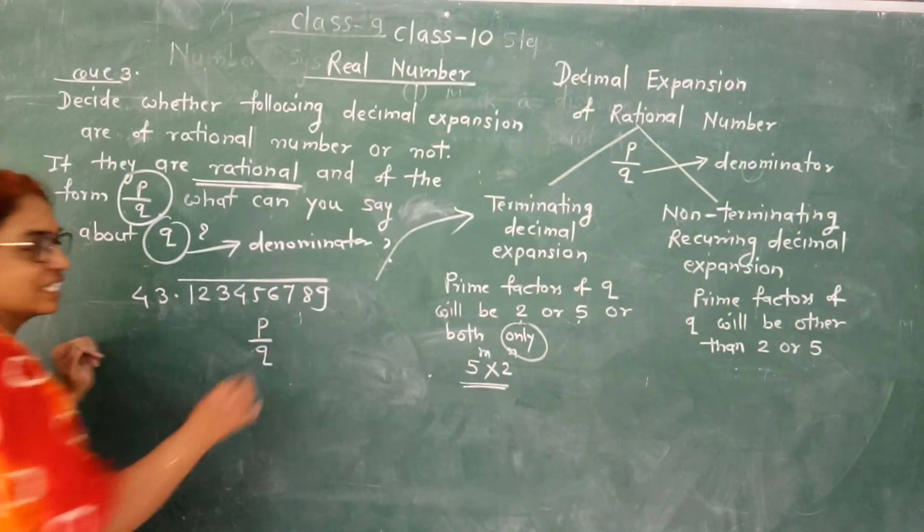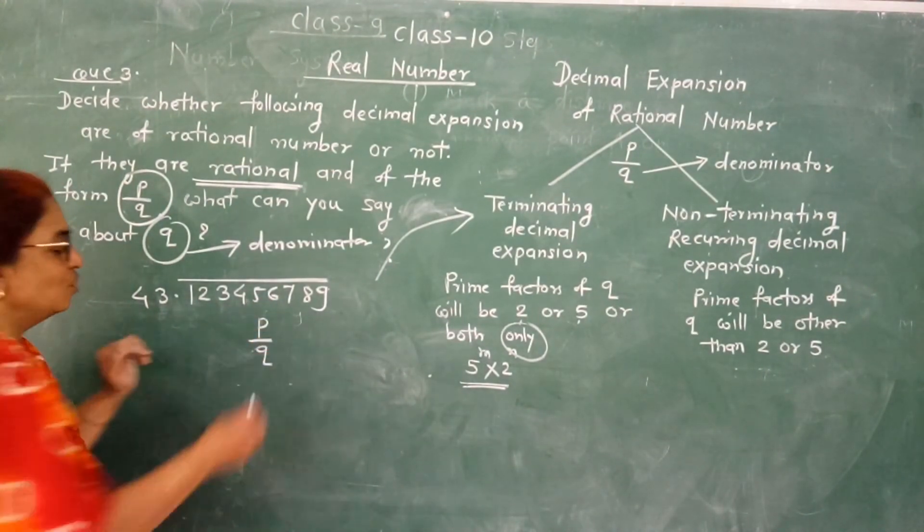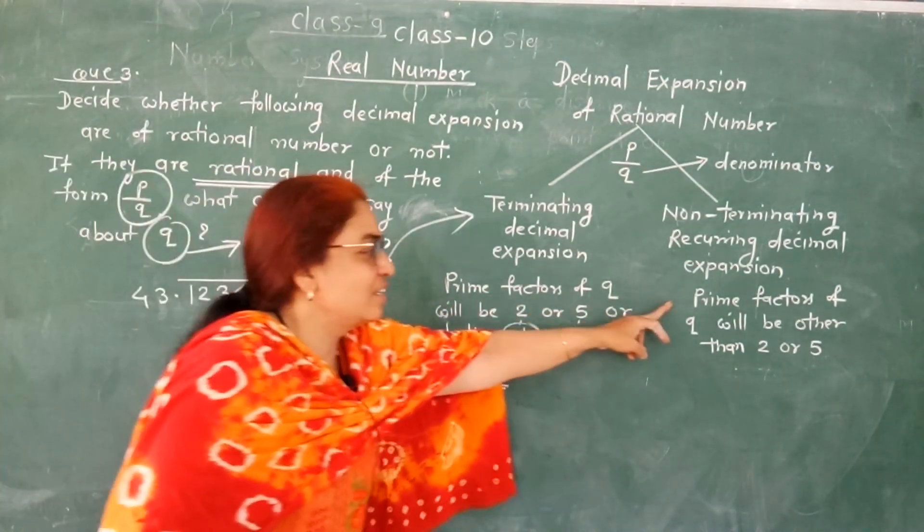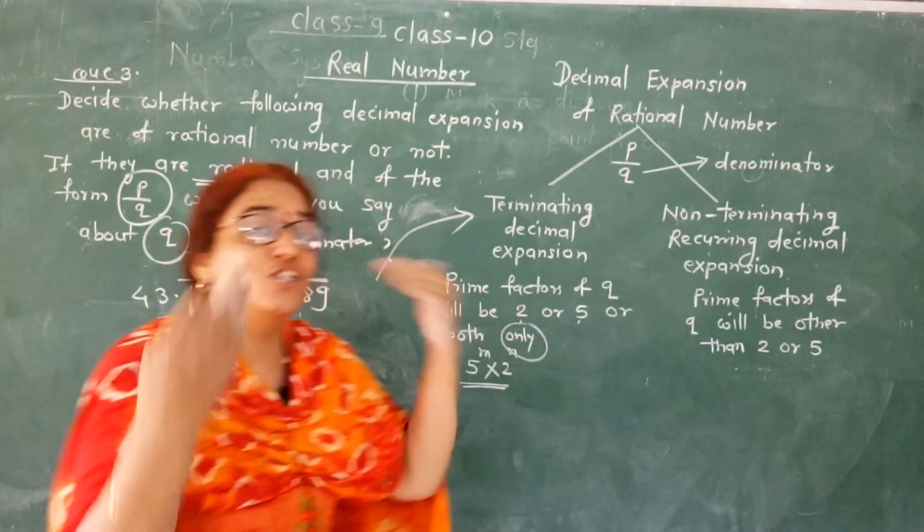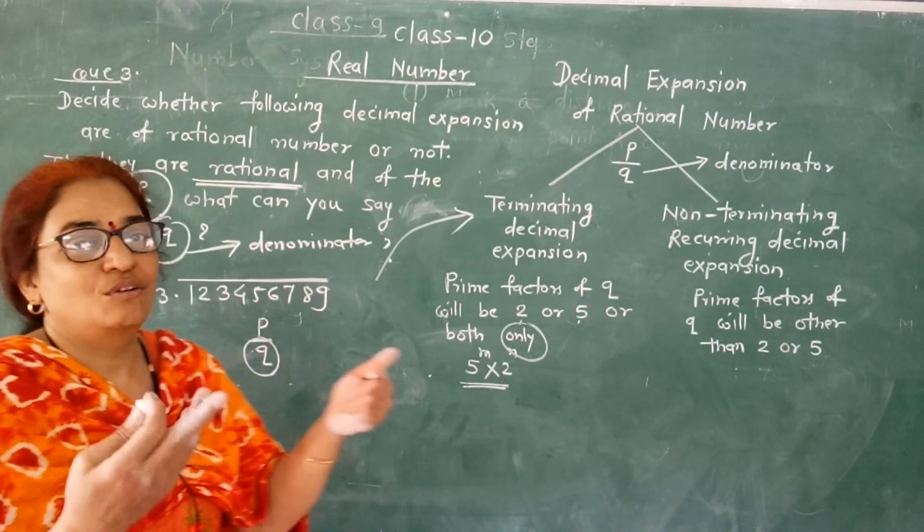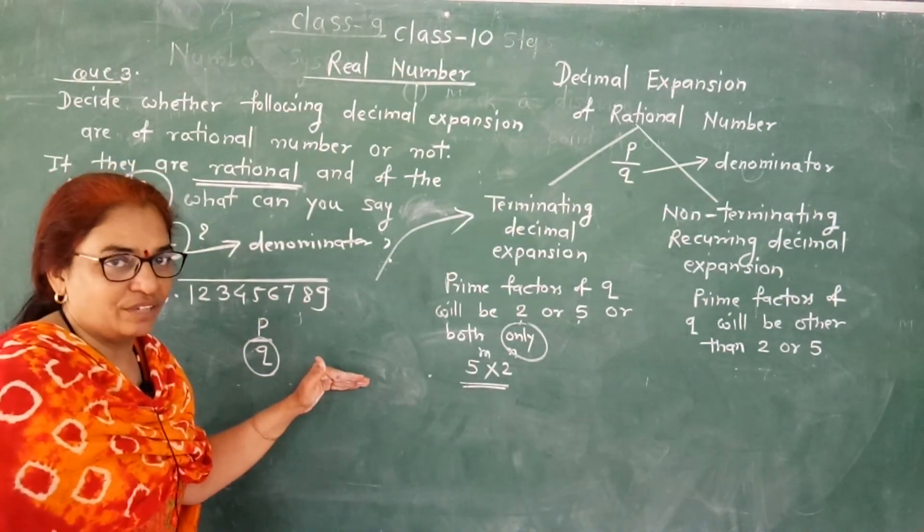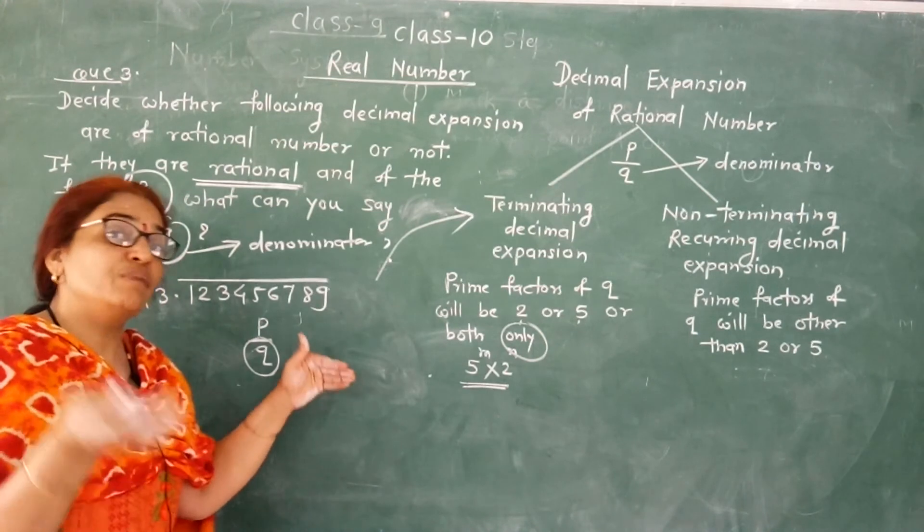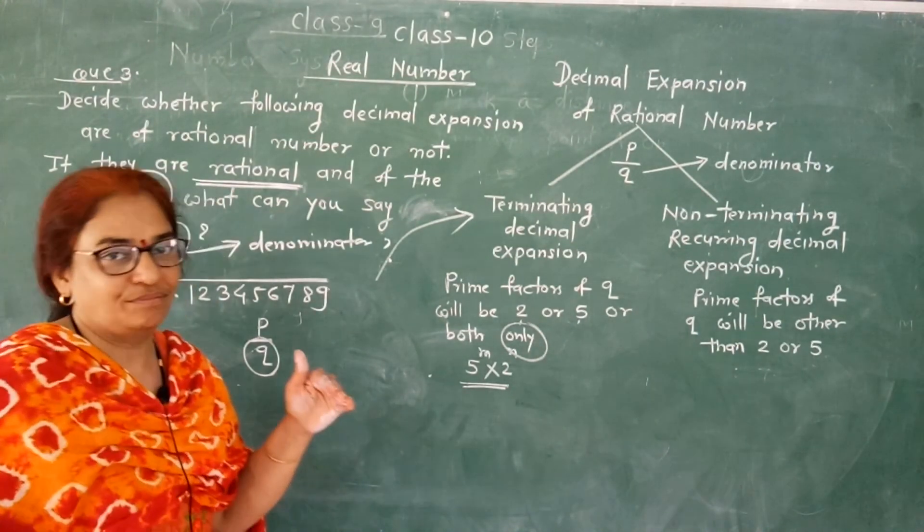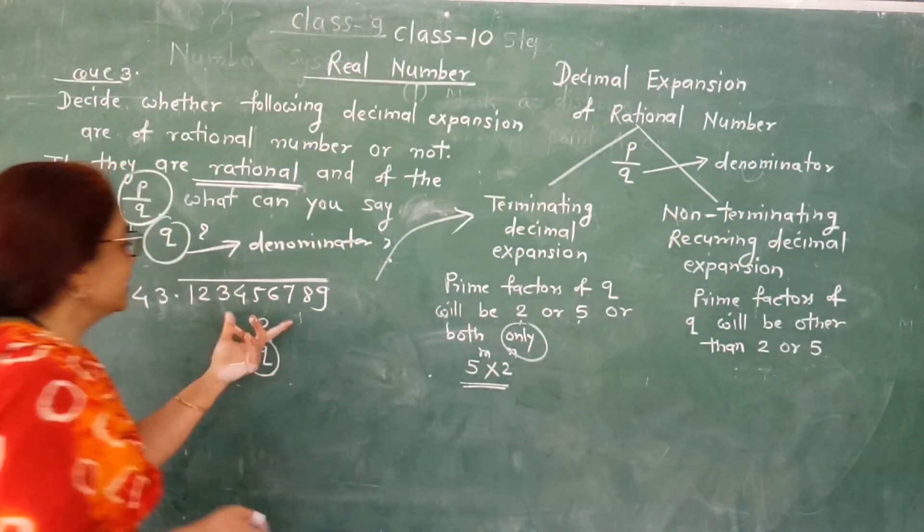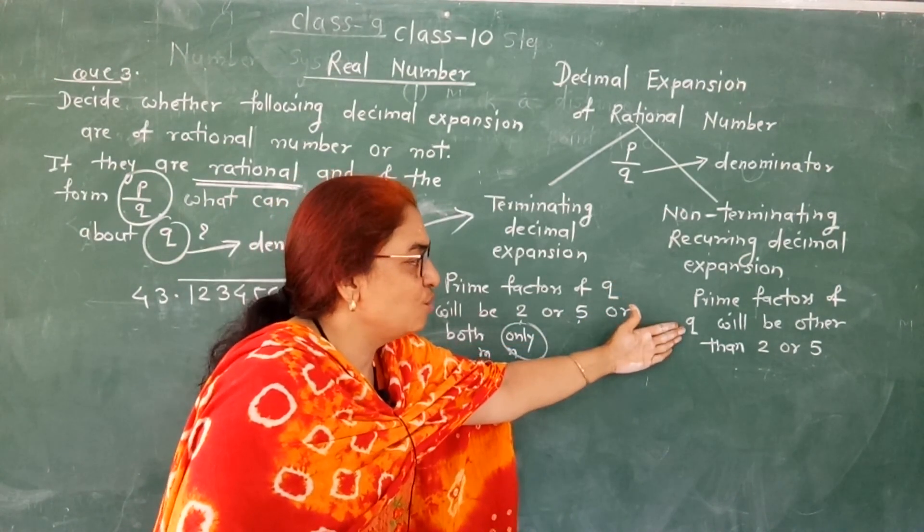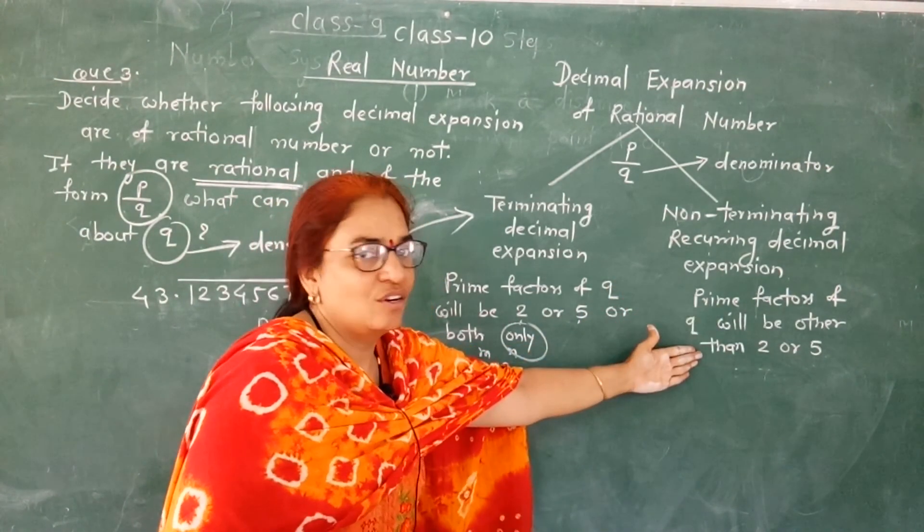This is a rational number. If it is rational number, then it is in p upon q form - we can write it. So the denominator will be in what form? The prime factors of denominator will be other than 2 and 5. And if 2 and 5 are present, then there will be some extra factor also. The answer is: prime factors of q will be other than 2 or 5.